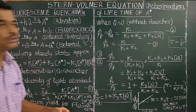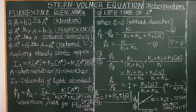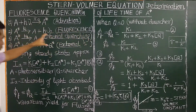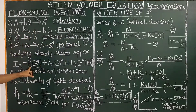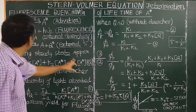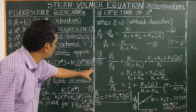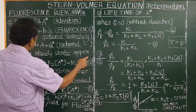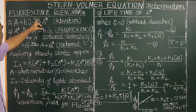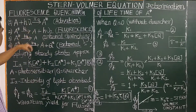Applying steady state approximation to A* (the excited state species, which is very unstable): the absorbed light undergoes fluorescence decay, internal quenching, and external quenching. So the intensity of absorbed light Ia equals K1[A*] + K2[A*] + K3[A*][Q]. The absorbed light intensity leads to these three processes.